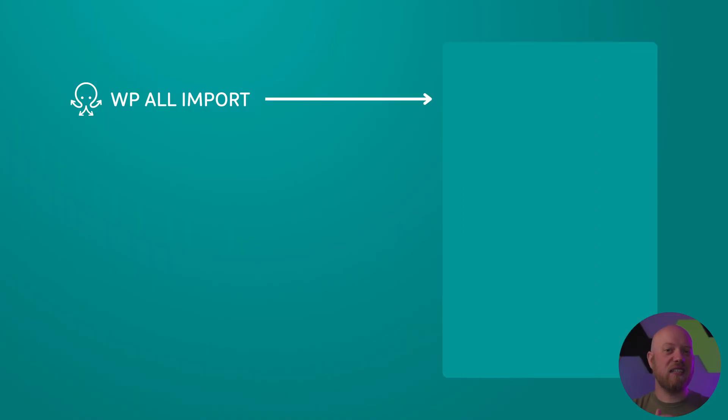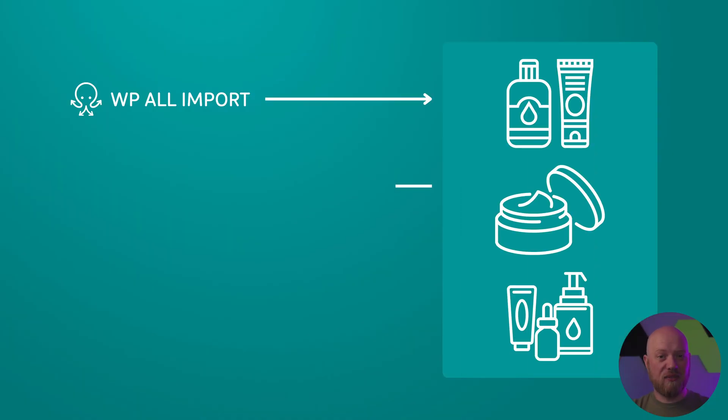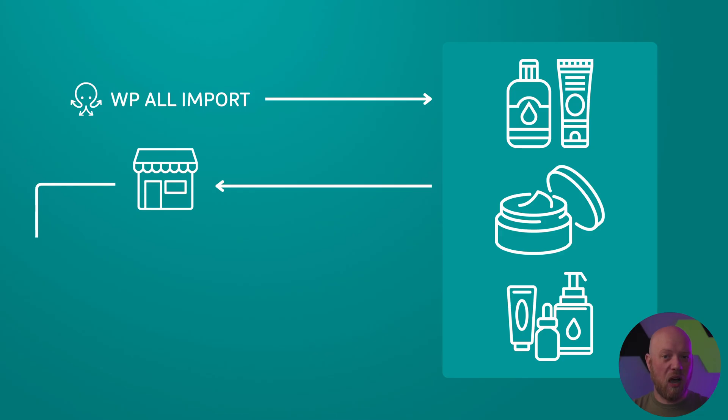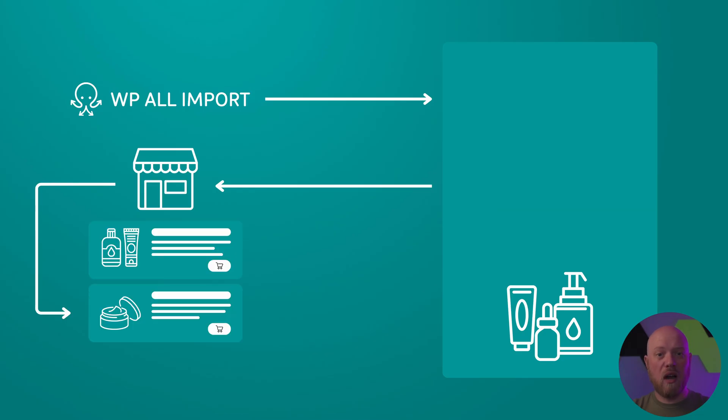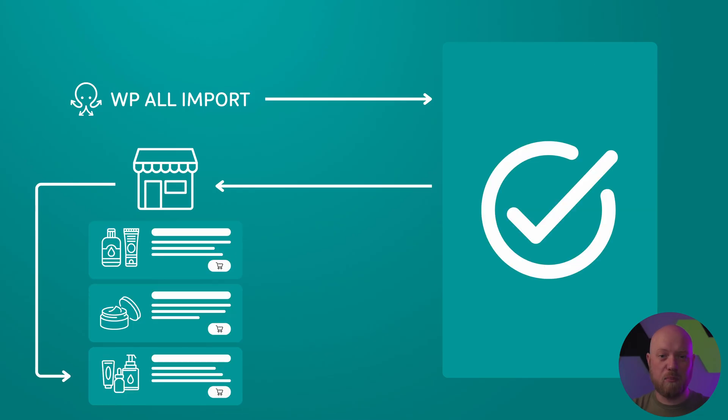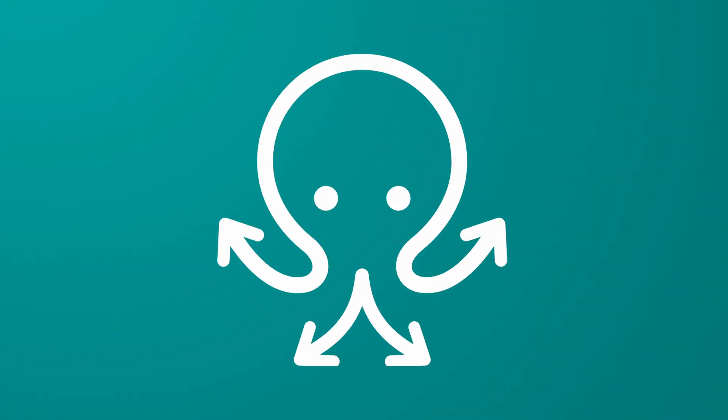Plus, these imports and exports can all be run on an automatic schedule. You can monitor an external product feed to add new products to WooCommerce or update stock and price, import data from an Excel sheet stored in Dropbox, import data from Google Sheets, and more.